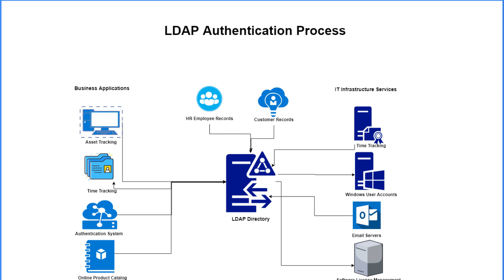If you connect to a corporate network, you usually have to provide a username and password. These credentials are sent to a centralized database, and the protocol used is commonly LDAP — the Lightweight Directory Access Protocol — which uses TCP port 389. It's useful for corporate accounts because you can disable or create accounts in a centralized way.